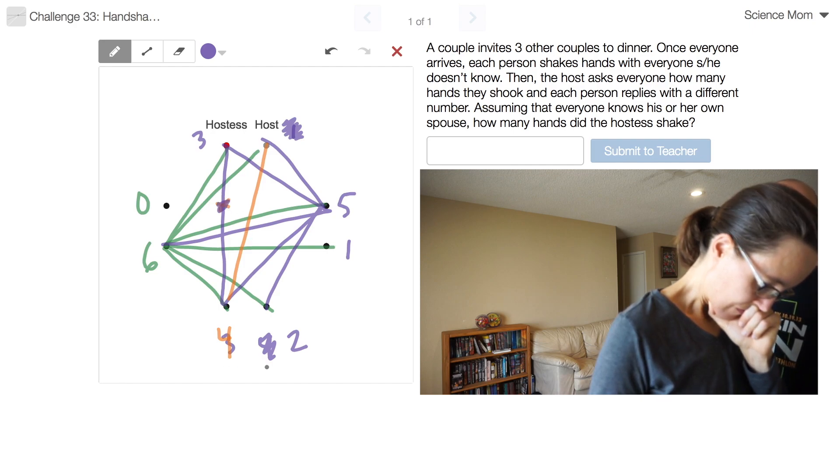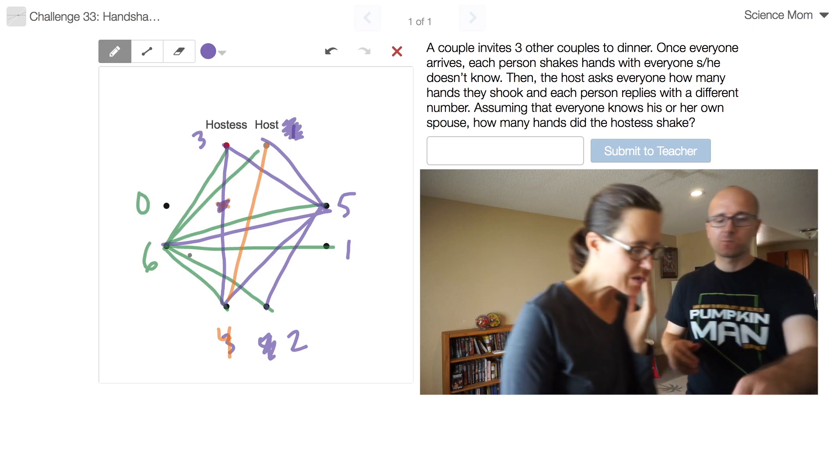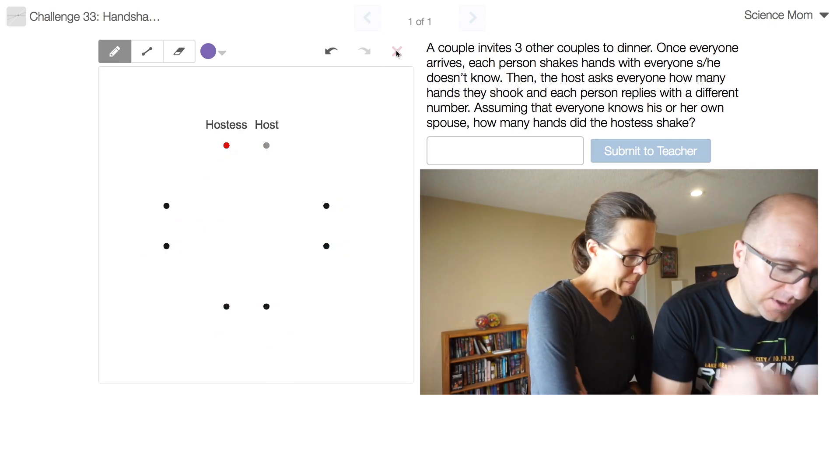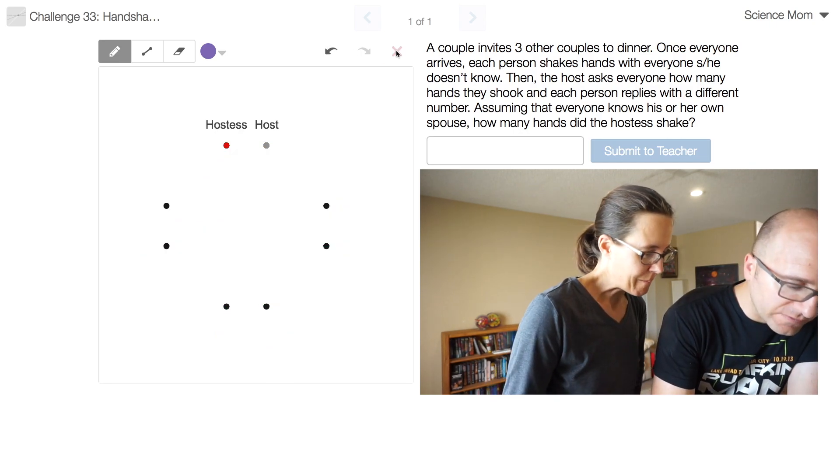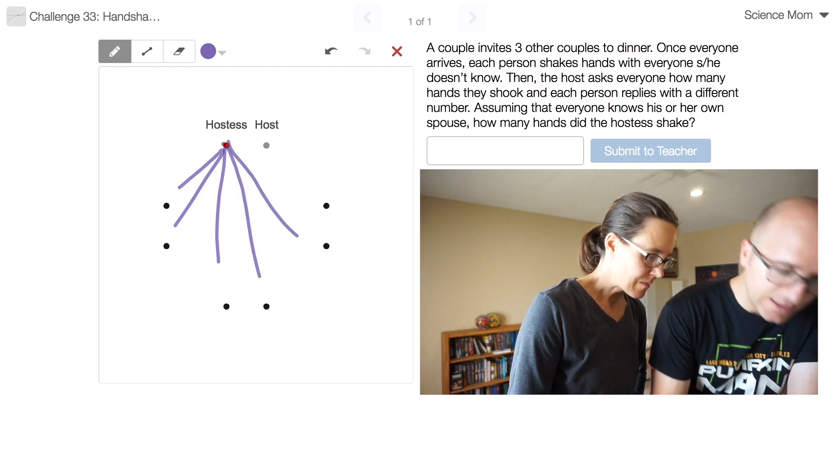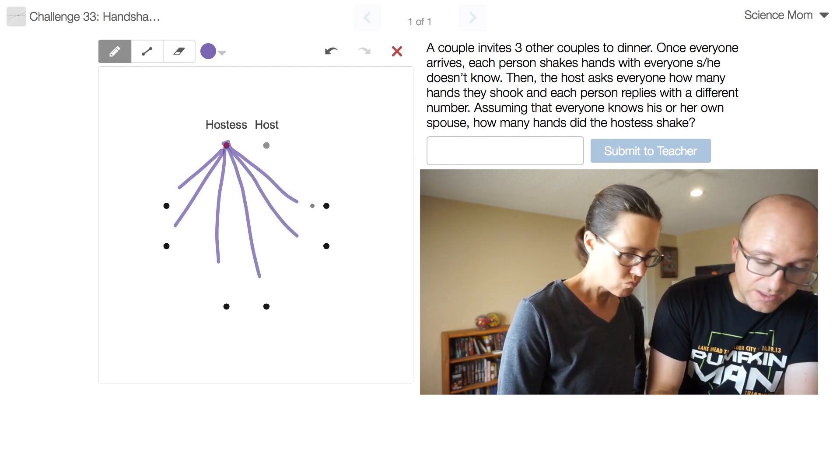All right, so in this, the way you filled it in, the hostess had three handshakes. Now, is that the number that she has to have? Is anything else possible? Turns out no. Really? Yeah. But how can you know that no other arrangements are possible?